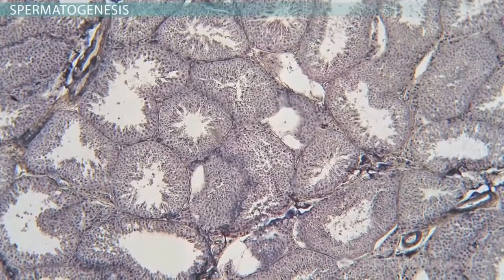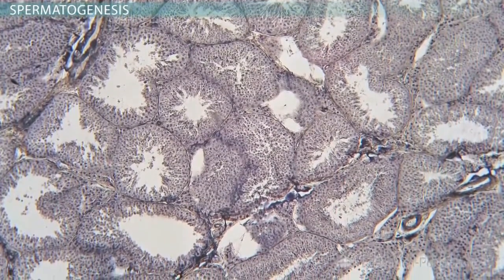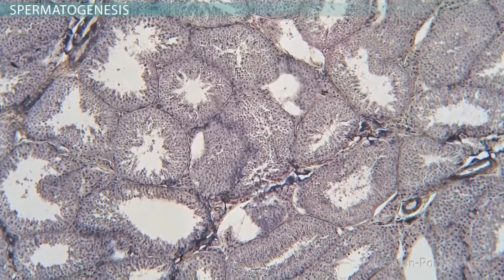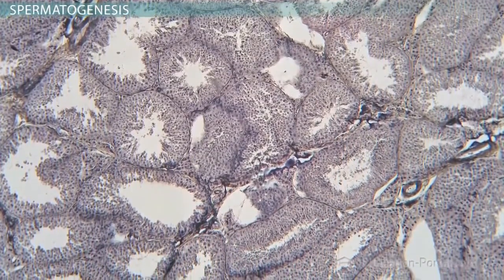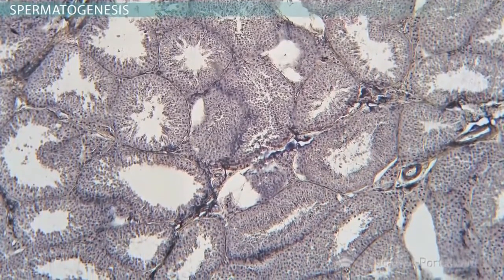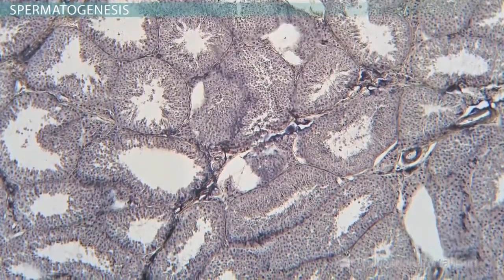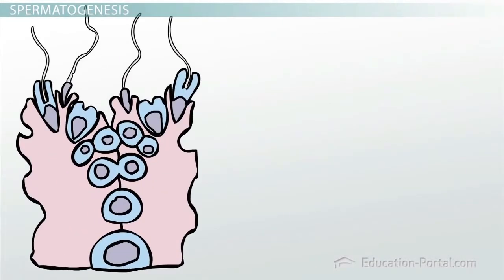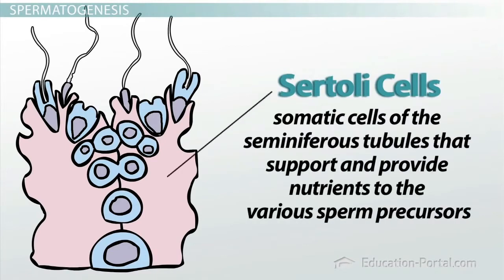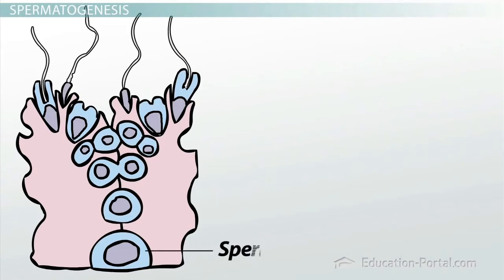Now let's see how all of this works in the context of the seminiferous tubules. As you can see from this highly magnified section, the testes are packed with seminiferous tubules which produce millions of sperm and release them into the lumens of the tubules. The tubules are lined with an epithelial layer of Sertoli cells, which are somatic cells of the seminiferous tubules that support and provide nutrients to the various sperm precursors. The rapidly dividing spermatogonia are located at the base of the Sertoli cells. Often, when a spermatogonium divides by mitosis, one of the daughter cells will take a position between Sertoli cells, enter meiosis.